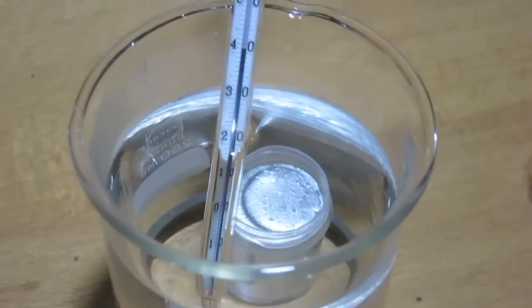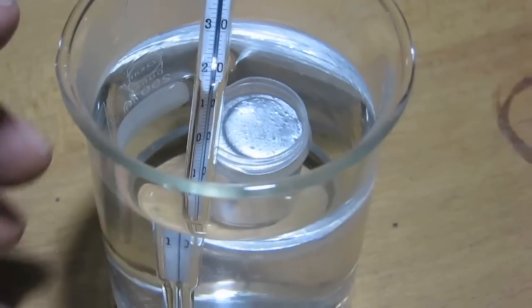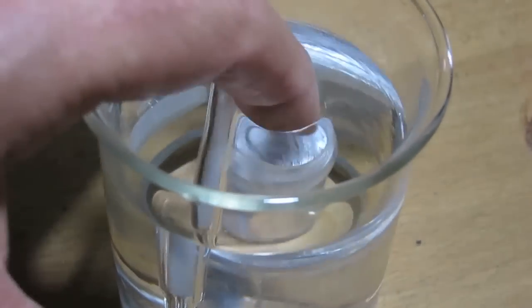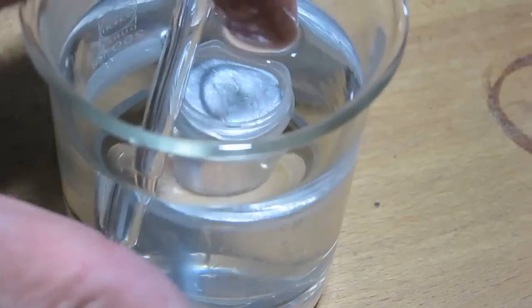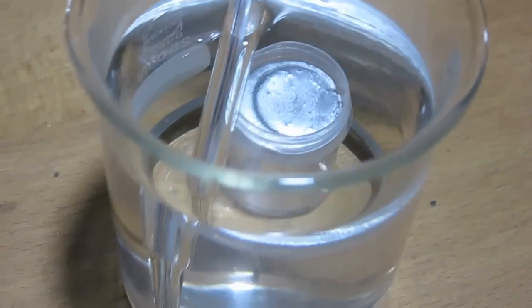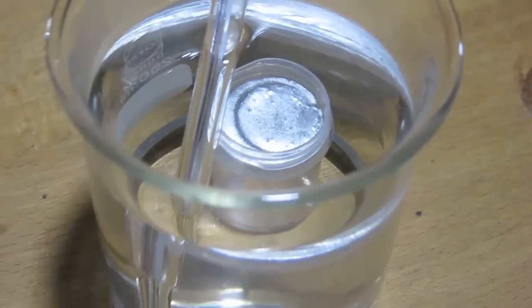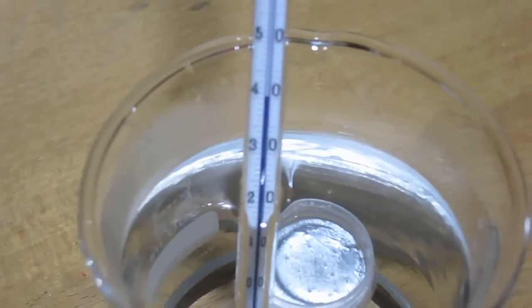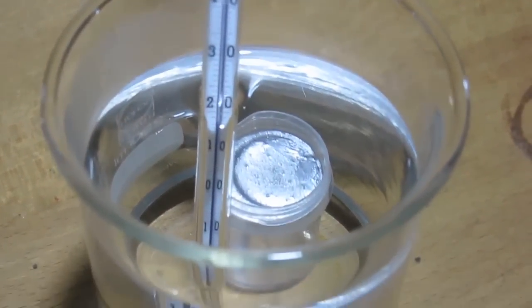This is another metal melting test - this is not a hot metal test, but a warm metal test. This is gallium, a metal which melts at 30 degrees Celsius. I've put it into some water at 40 degrees Celsius.